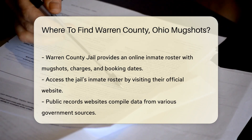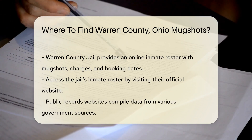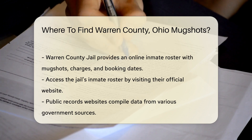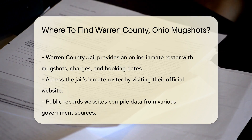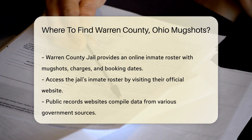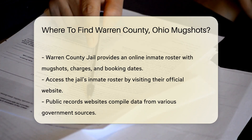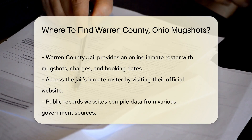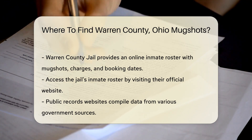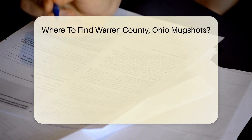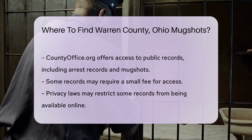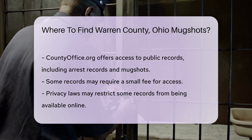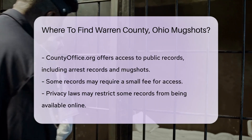Public records websites are another option. These sites compile data from various government sources. One such site is countyoffice.org. It offers access to public records, including arrest records and mugshots. Simply search for Warren County, Ohio, and follow the links provided.